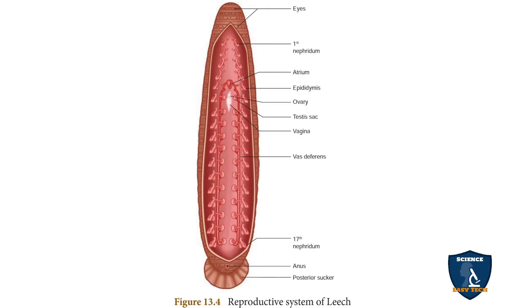To summarize, there are 11 pairs of testes in bag-like structures called testes sacs. The testes form a short duct called vas deferens, which connects and forms a convoluted structure called the epididymis where spermatozoa is stored, also called a sperm vesicle. The epididymis leads to the ejaculatory duct, which has two gland structures: a coiled prostate gland and a penile sac.